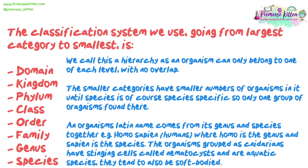An organism's Latin name comes from its genus and species together. For example, Homo sapien — humans — where Homo is the genus and sapien is the species. The organisms grouped as Cnidarians have stinging cells called nematocysts and are aquatic species. They tend to also be soft-bodied.